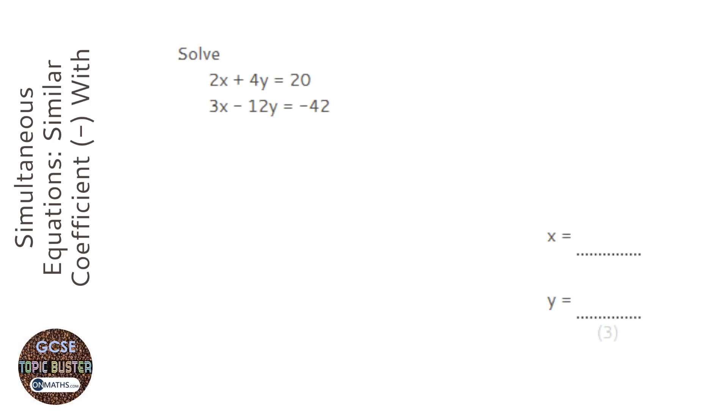Okay, so we have two equations we're asked to solve, so we have simultaneous equations here. But we notice that the coefficients are different for the x and the y. The x has 2 and 3 and the y has 4 and 12, and we need them to be the same.